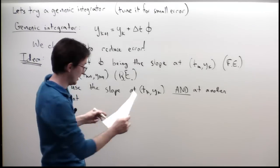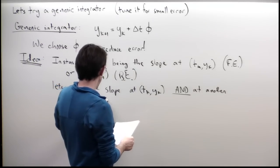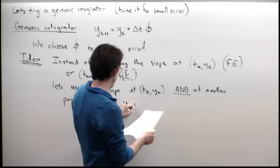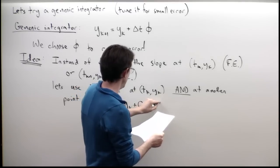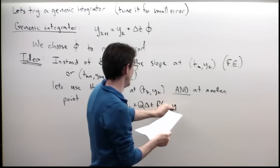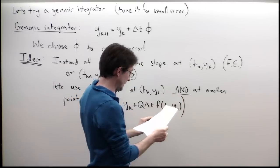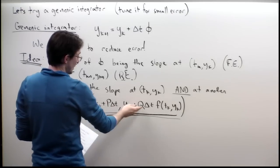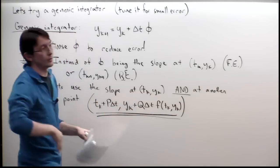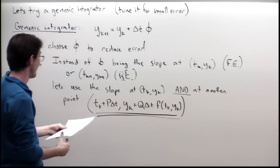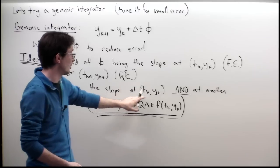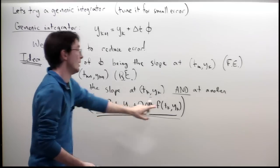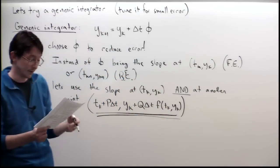This other point is going to be t_k plus P·delta-t for the time coordinate, and y_k plus Q·delta-t times F evaluated at (t_k, y_k) for the space coordinate. By just introducing these two additional parameters P and Q, I have the ability to tune up my integrator and make it a little fancier.